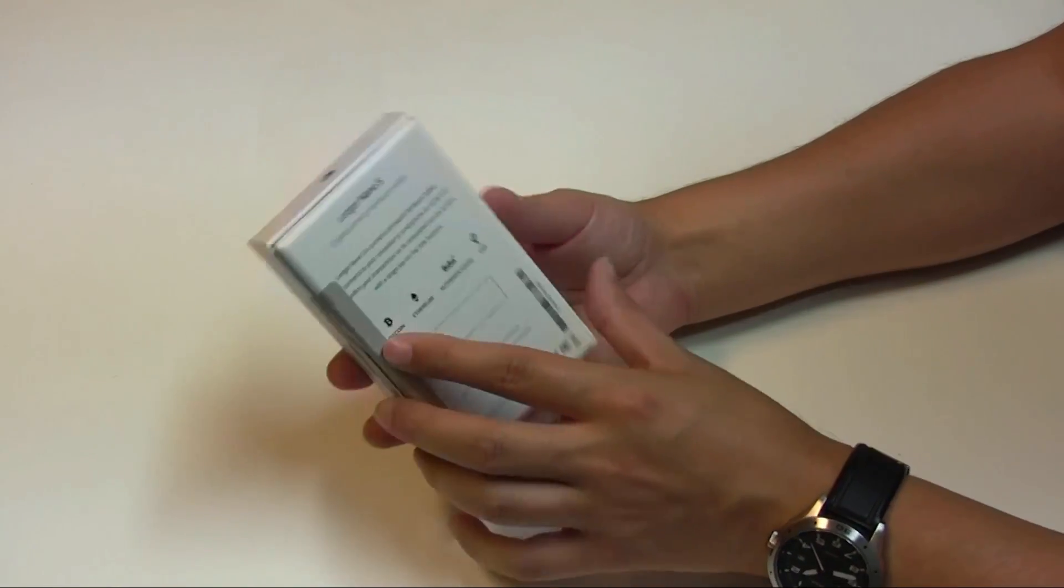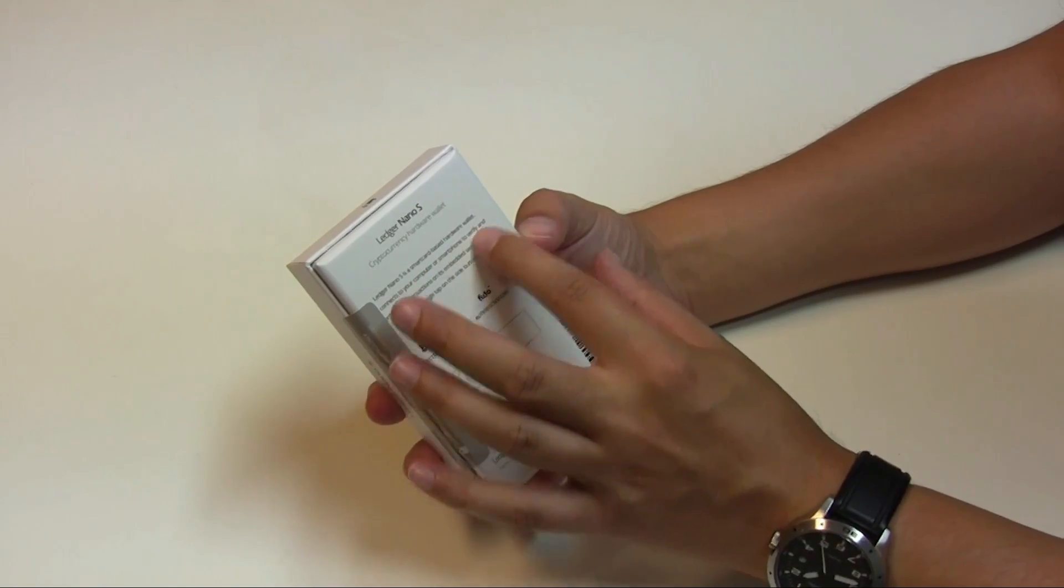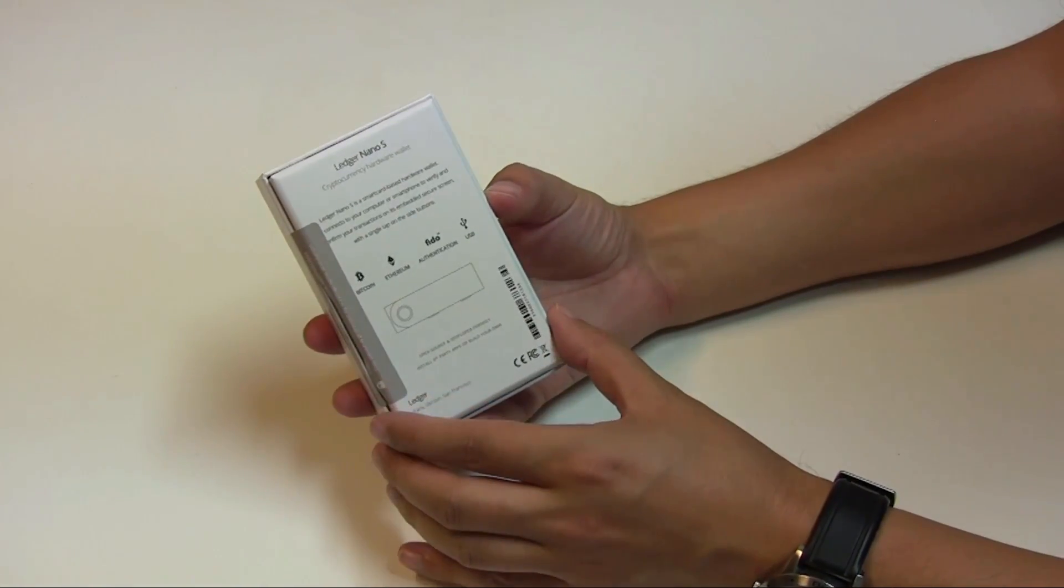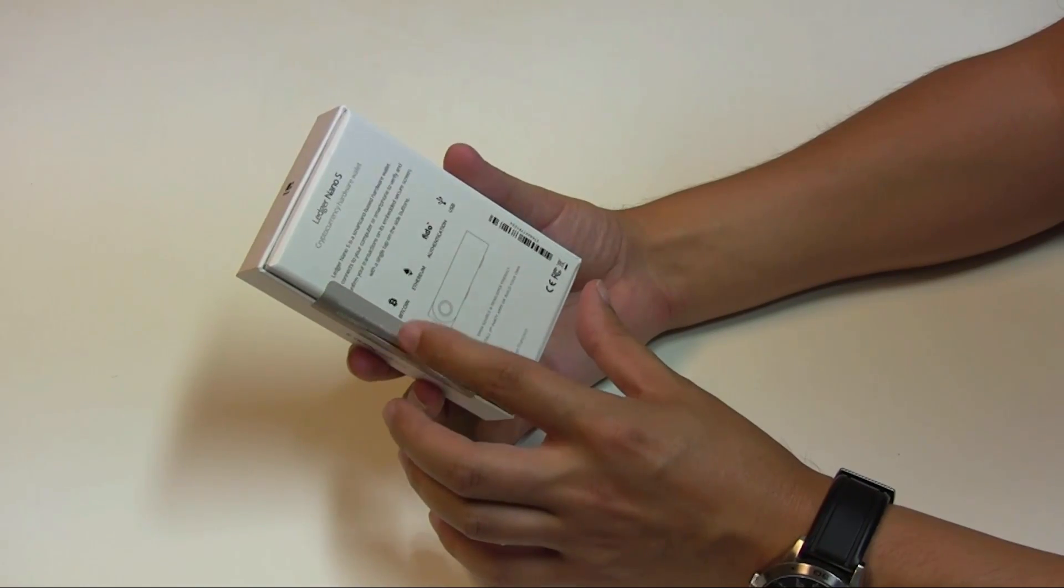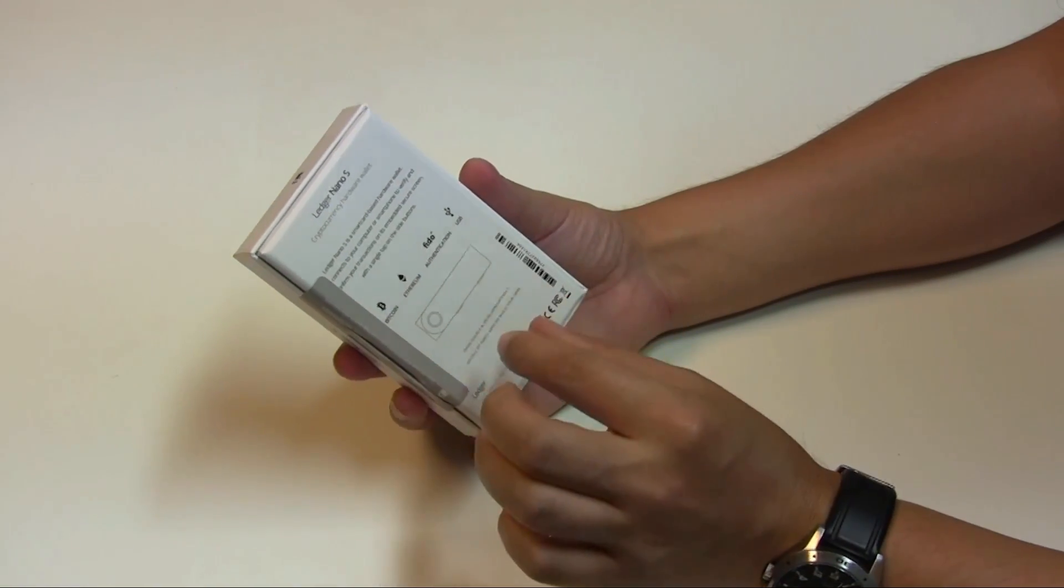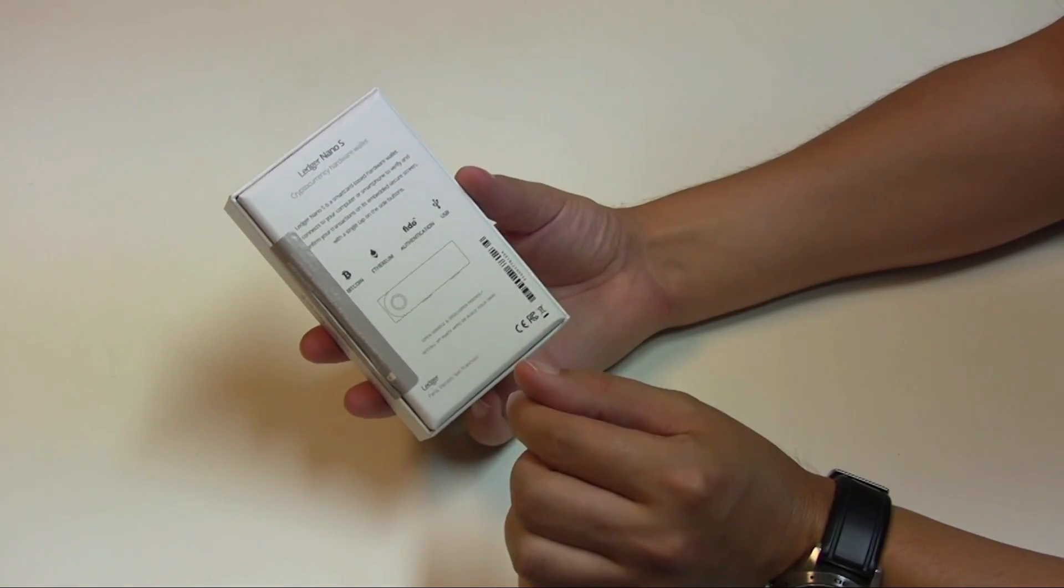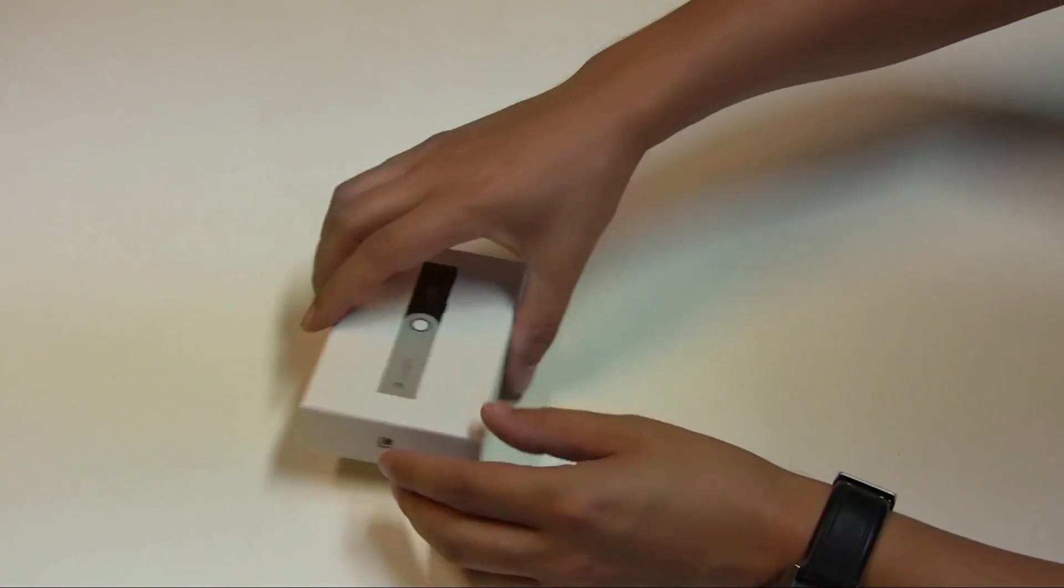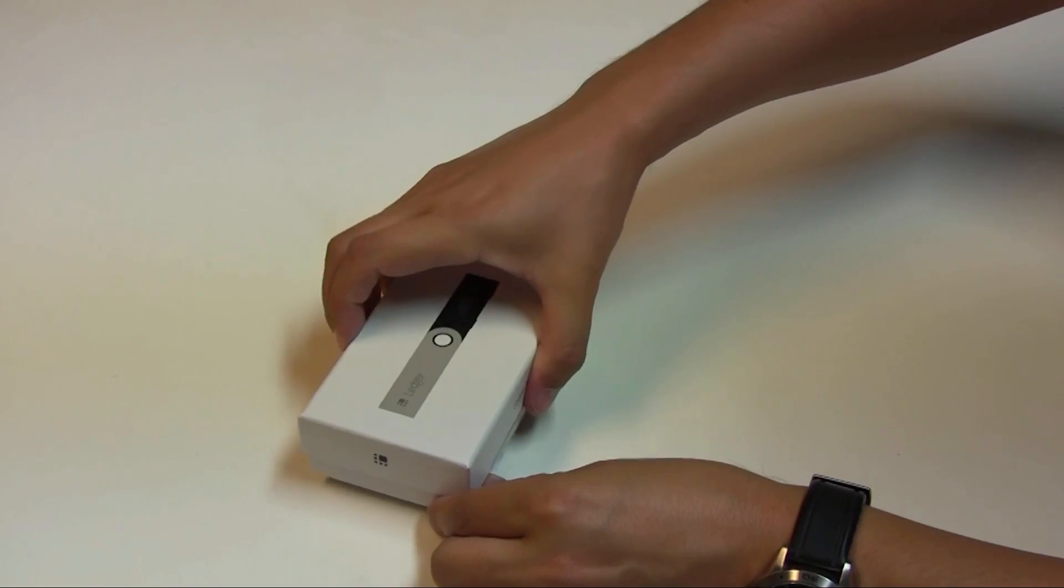So it just says on the back, it's a smart card based hardware wallet and connects to your computer or smartphone to verify and confirm your transactions. You can use it for Bitcoin, Ethereum, FIDO, and it's obviously a USB device. So let's give a little wiggle and have a look inside.